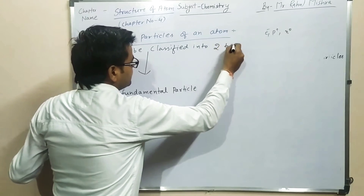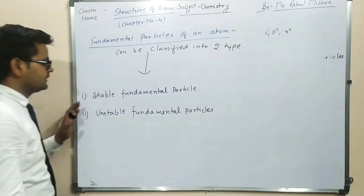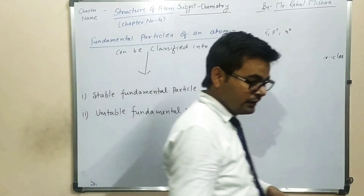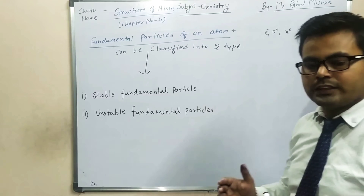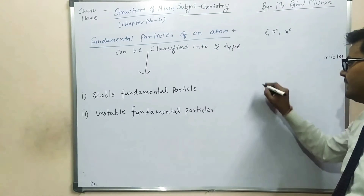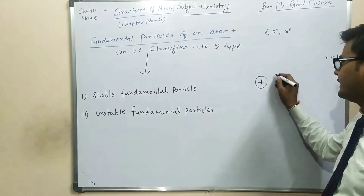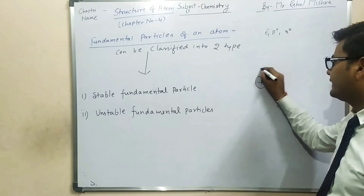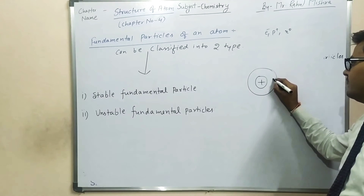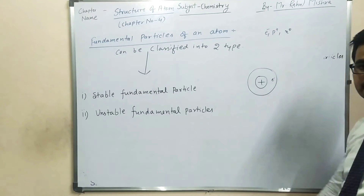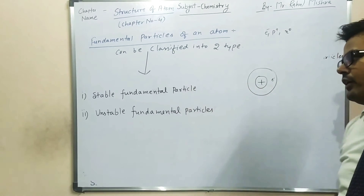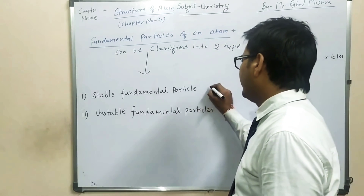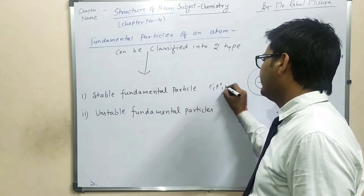The first one is stable fundamental particles. It means those particles which can exist stable outside the nucleus. ऐसे fundamental particles जो की nucleus के बाहर कुछ समय के लिए exist कर सकते हैं, या ठहरते हैं — then those fundamental particles are called as stable fundamental particles, like electron, proton and neutron.